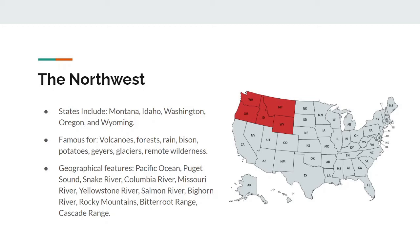Geographical features here include the Pacific Ocean, Puget Sound, the Snake River, the Columbia River, the Missouri River, the Yellowstone River, the Salmon River, the Bighorn River, the Rocky Mountains, the Bitterroot Range, and finally the Cascade Range.